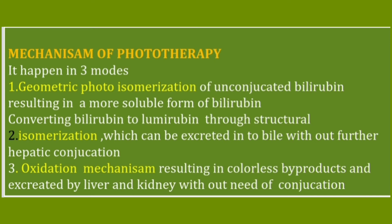The mechanism of phototherapy has three modes. The first is geometric photo isomerization, the second is structural isomerization, and the third is oxidation. In the first method, unconjugated bilirubin is converted into conjugated bilirubin and excreted in urine and stool. In the second and third methods, without conjugation, bilirubin is directly eliminated in urine and bile.